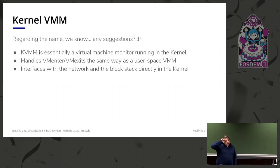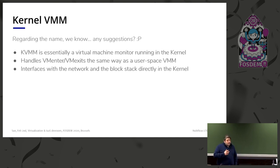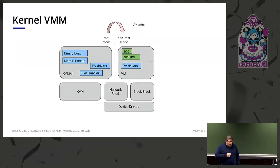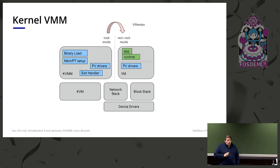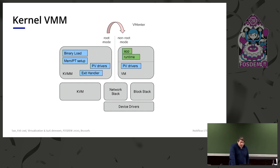KVMM is a VMM running in the Linux kernel. It handles VM enters and VM exits the same way as QEMU or Solo5 HVT, and interfaces with the network and block stack directly in the kernel. This is all in kernel space, so there is no mode switch. On VM exits and enters, nothing interrupts execution. The VM runs on the right part of the graph, PV drivers interface with the VMM in the Linux kernel, and there is only a root mode to non-root mode switch.